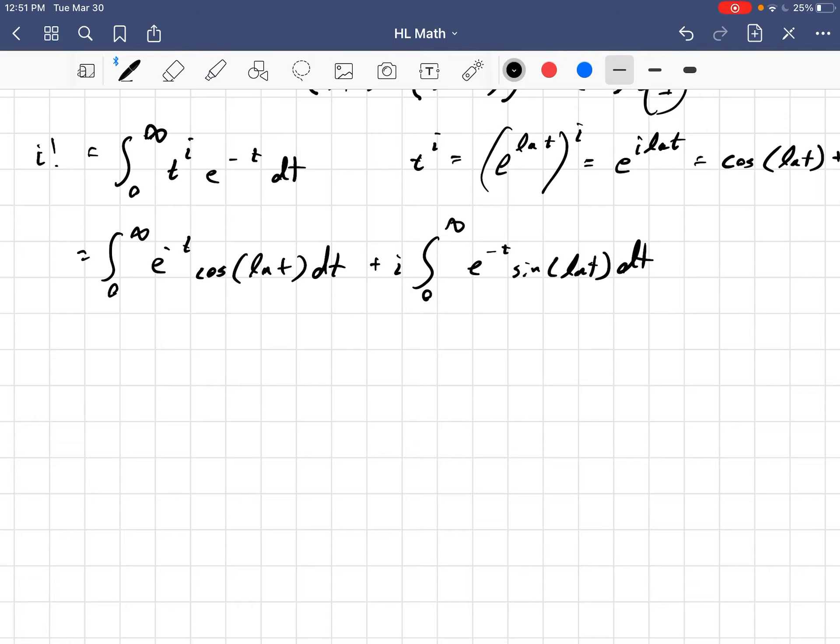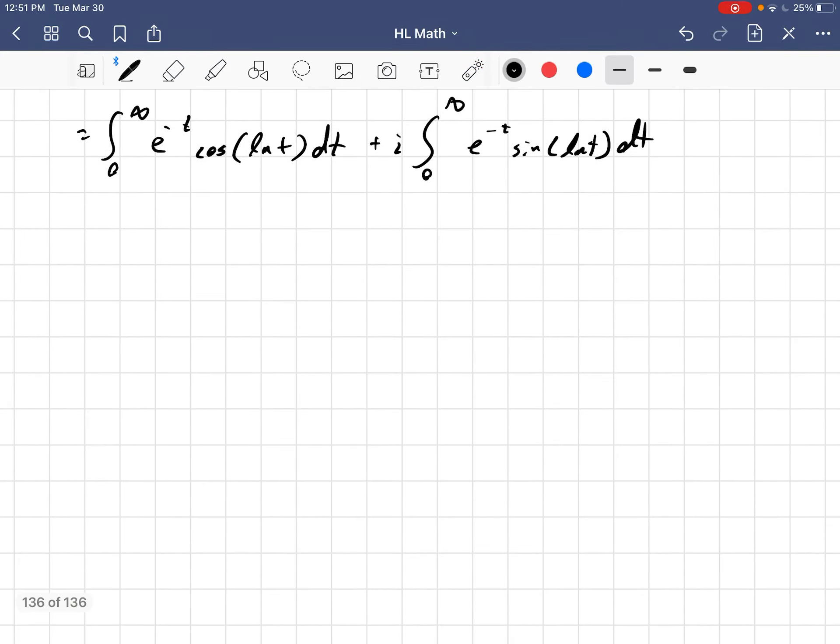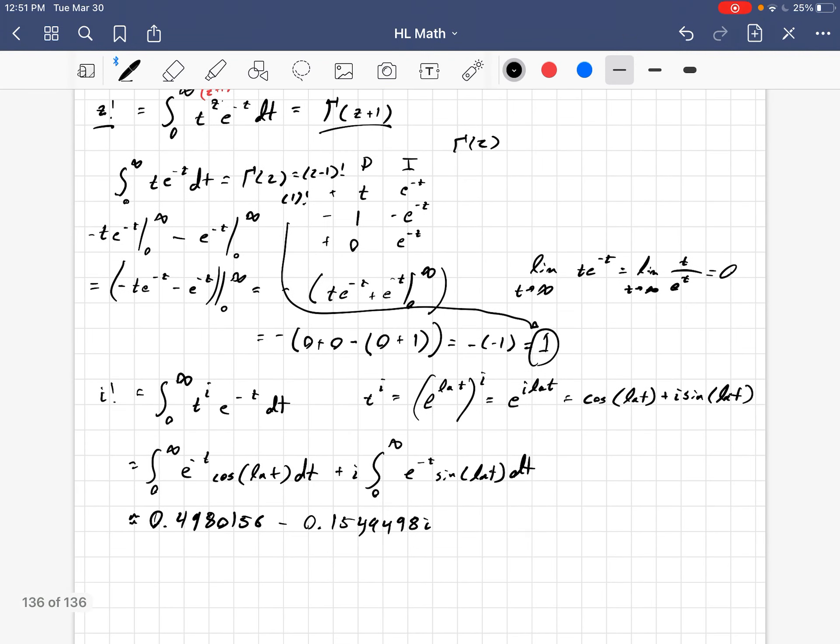Now, it does turn out, unfortunately, that this integral here cannot be done. It doesn't have an elementary antiderivative. That is unfortunate, because now what we essentially have to do is estimate this using Riemann sums or things like this. Usually, Simpson's rule is used here. But in any case, we're going to get approximately 0.4980156 minus 0.1549498i. I have this value committed to my head. Of course, that is a very important mathematical concept, and you should commit it to your memory as well.